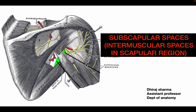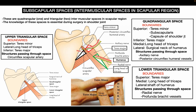Today's lecture is regarding the subscapular space, also known as the intermuscular space, which is present near the scapular region. There are two types: a quadrangular one and two triangular ones. Knowledge of this space is essential during surgery in the shoulder joint.